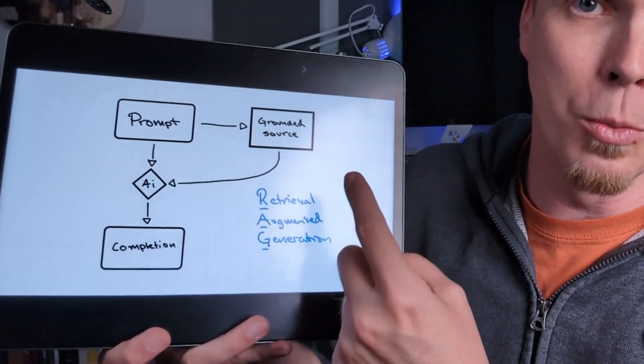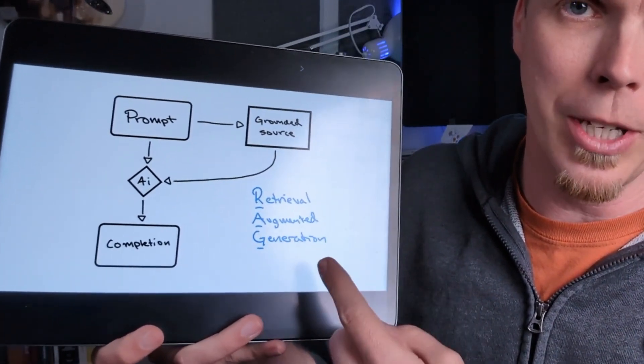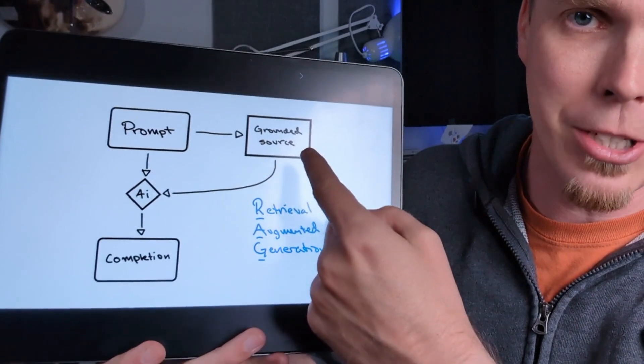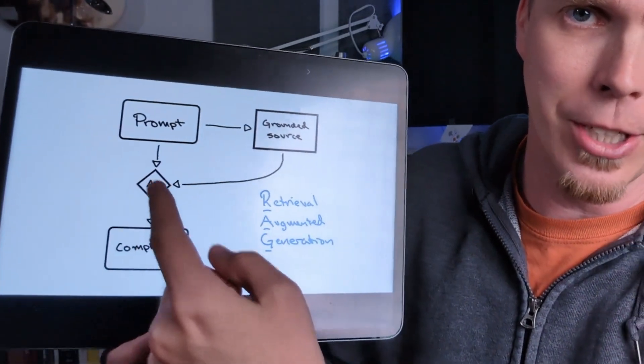This process is called retrieval augmented generation because it retrieves information, and then it augments that information and gives it back to you.